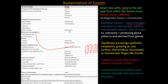A meningioma is a benign tumor of the meninges or the brain coverings. You can have a leiomyoma, which is a smooth muscle benign tumor, and a rhabdomyoma, which is a striated muscle benign tumor. You can have a squamous cell papilloma from stratified squamous epithelium, and from the epithelial lining of glands or ducts, you have an adenoma, papilloma, and cystadenoma.